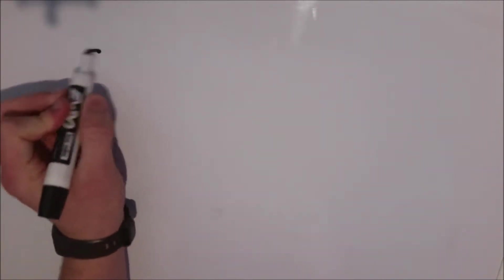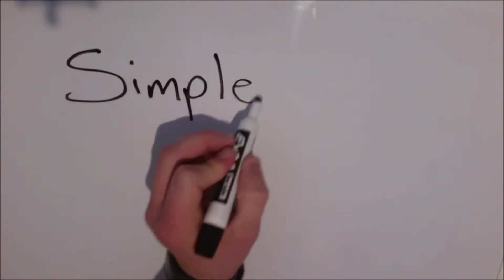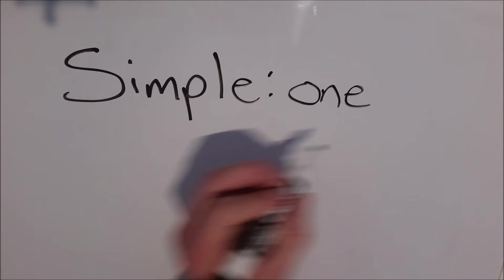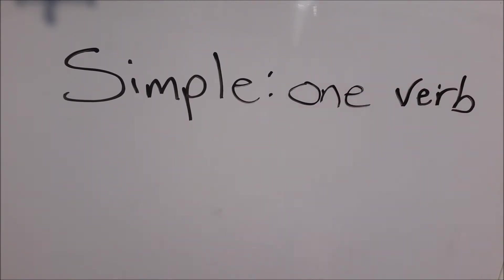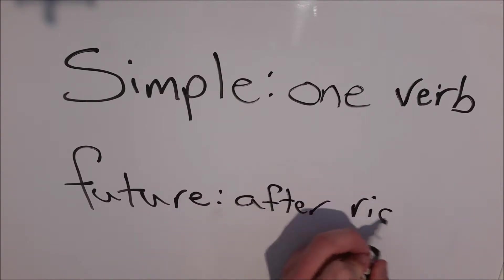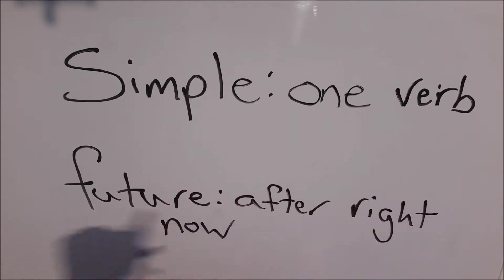So let's first figure out what simple future means. Simple, in a grammar sense, means one verb. So like the present tense or like the conditional, but it's the opposite of a compound tense like the passé composé. And then future means anything after right now.